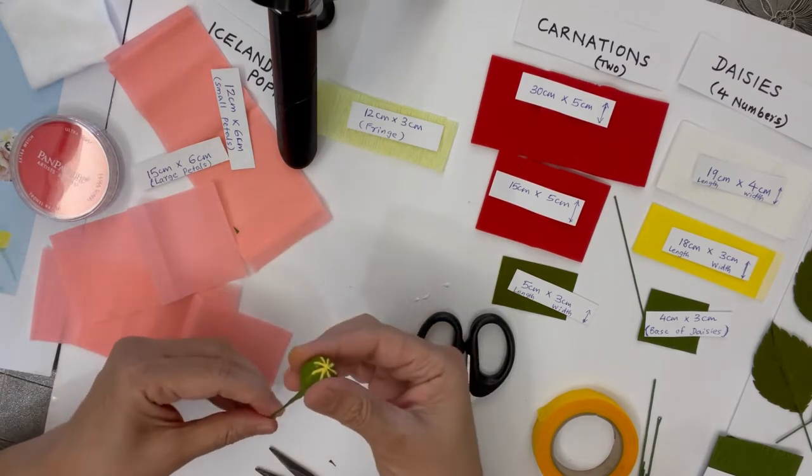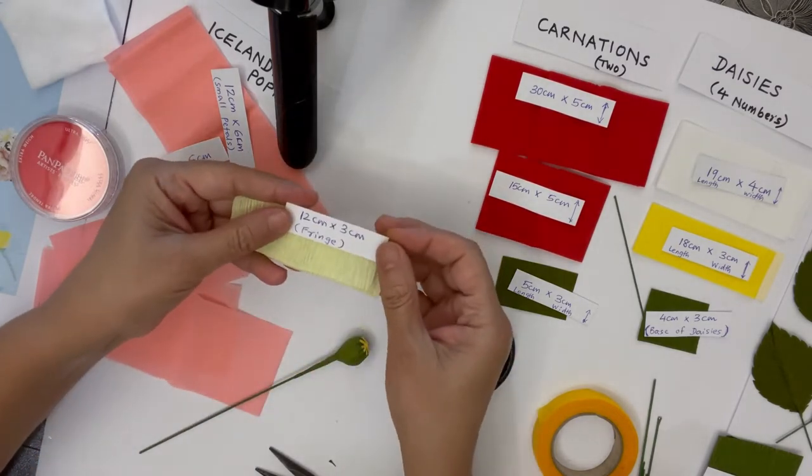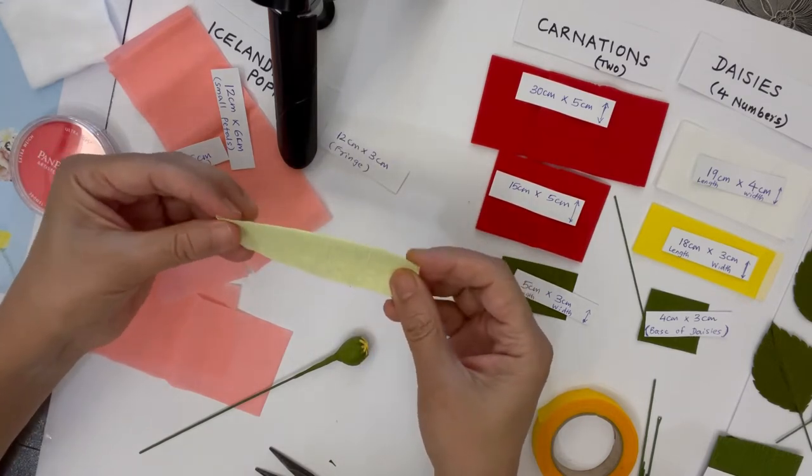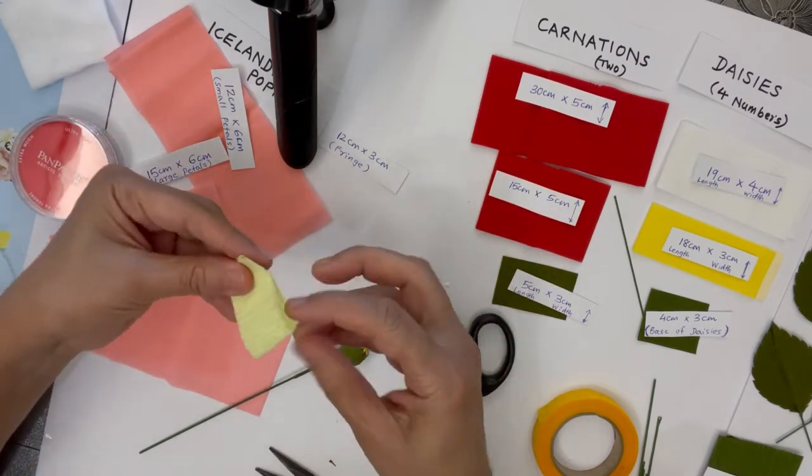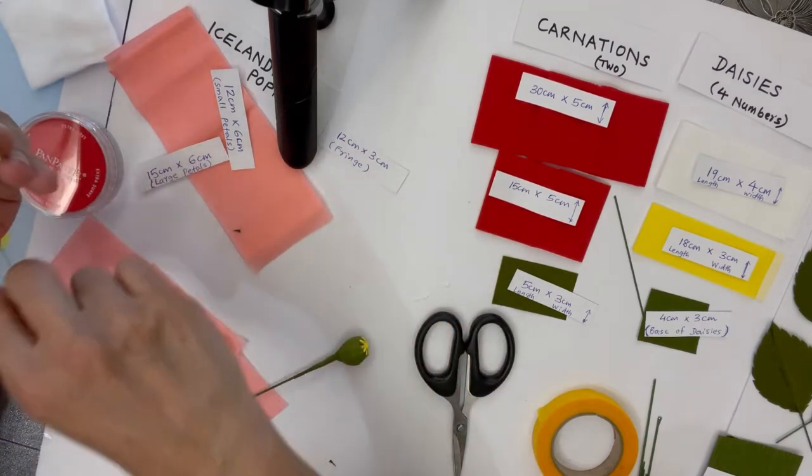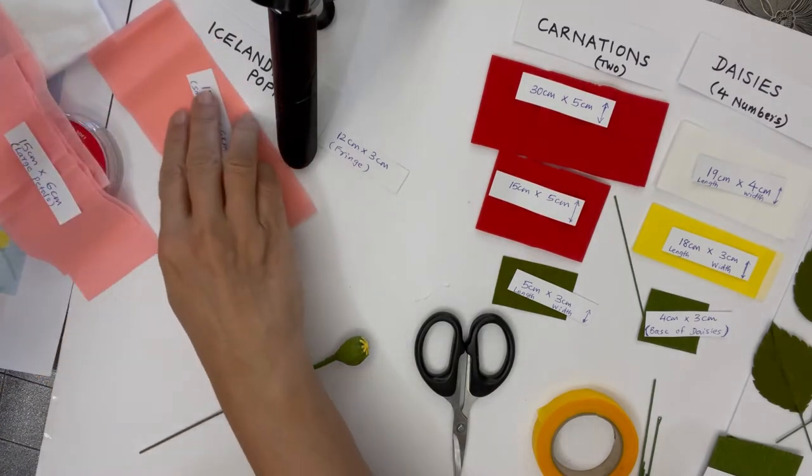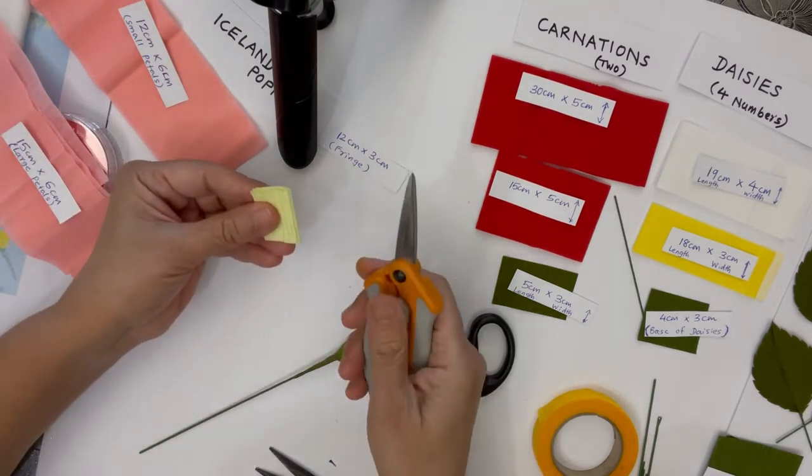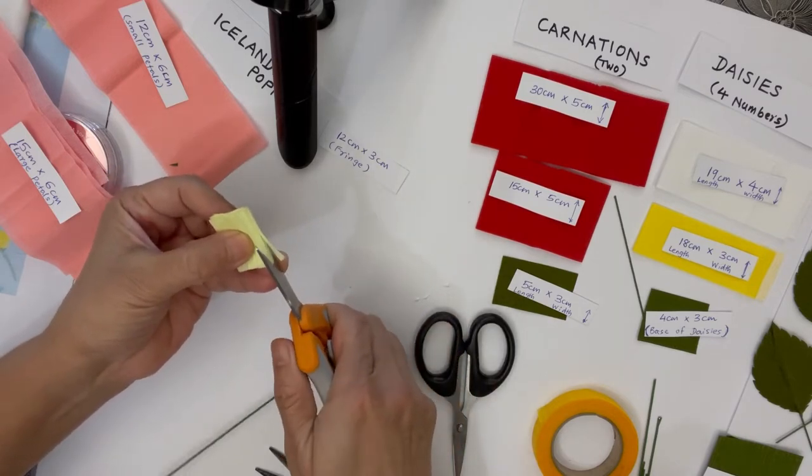For the fringe around the center, this is a 12 cm by 3 cm yellowish green strip. I can stretch it a little bit and fold it.